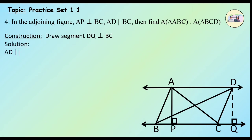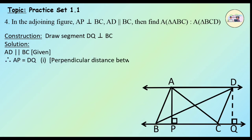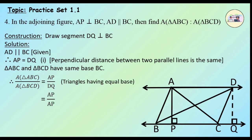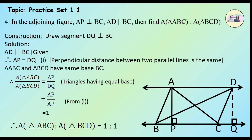Now, AD is parallel to BC, which is given. Therefore AP = DQ — let us consider this as equation 1 — since the perpendicular distance between two parallel lines is the same. Triangle ABC and triangle BCD have the same base BC. Therefore, the ratio of areas equals the ratio of their corresponding heights. So, area of triangle ABC upon area of triangle BCD = AP upon DQ = AP upon AP (since AP = DQ), i.e., 1. Therefore, area of triangle ABC to area of triangle BCD is equal to 1 : 1.